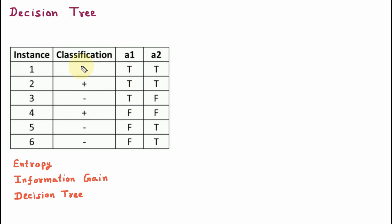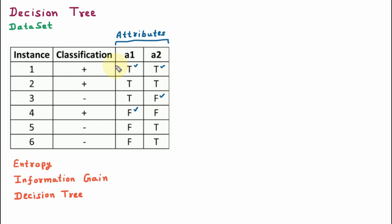Here we are given with a dataset. The dataset contains six instances. There are two attributes: attribute A1 contains values true and false, and attribute A2 contains values true and false. The dataset also contains a target variable which is classification and it can be positive or negative. So there are two possible outcomes, meaning it is binary classification.